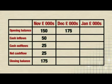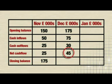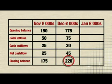Let's put in December's figures. The opening balance is £175,000. This time, the inflows are £75,000 and the outflows are £30,000. So this gives us a net cash flow of £45,000. If we add that to the opening balance, we get £220,000 for the December closing balance.